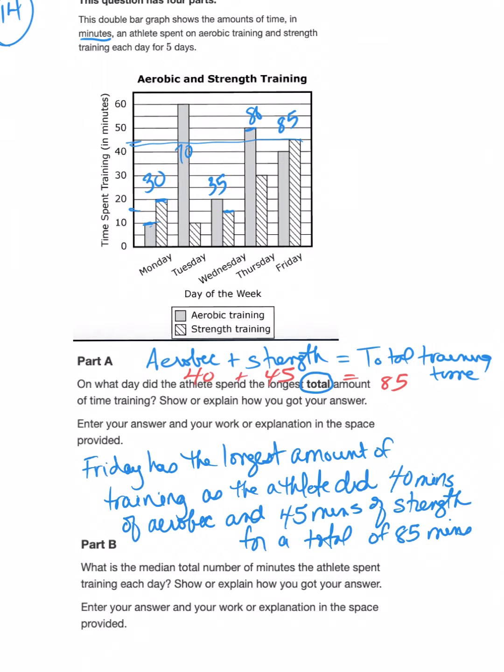Part B asks, what is the median total number of minutes the athlete spent training each day? We have to remember that median means the middle, and it's not the middle based on the order of the days—it's the middle in numeric order of the time. So if I put this in numeric order, I get 30, 35, 70, 80, and 85. That's the key with the median: you have to put the numbers in numeric order first, then count from either end till you get to the middle. Our answer is 70.